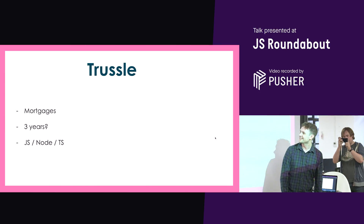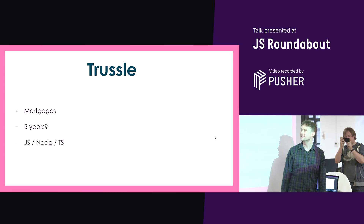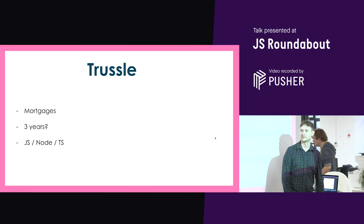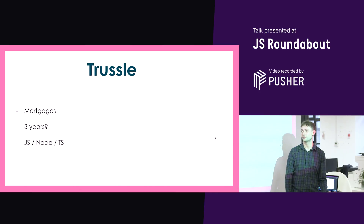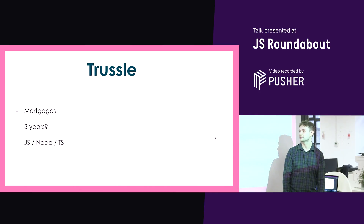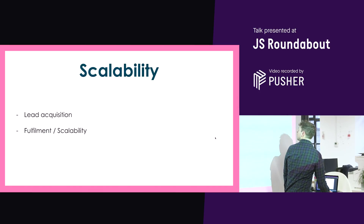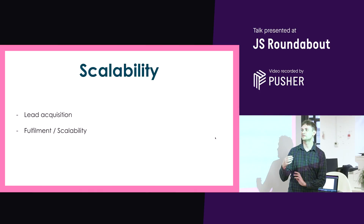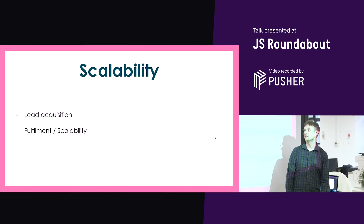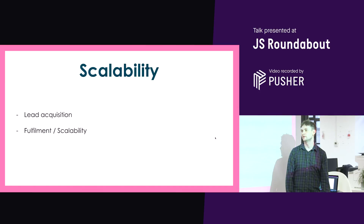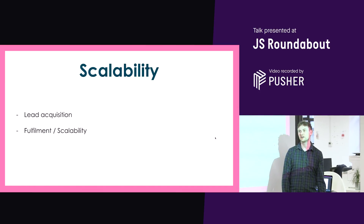Ish pretty much explained our company, so I can skip through this really quickly. A lot of our work is around mortgages and fulfilling mortgages. We've been around for about three, three and a half years. The majority of our stack is in JavaScript, Node, or TypeScript. To give a very brief rundown of how the teams are structured within product, we have lead acquisition on one side and fulfillment scalability on the other.